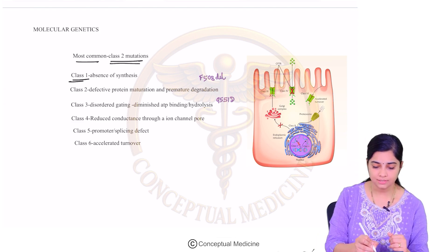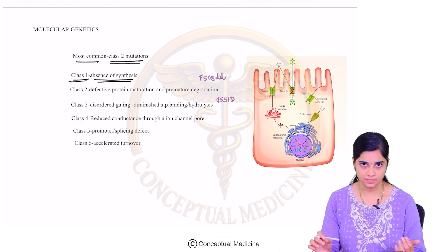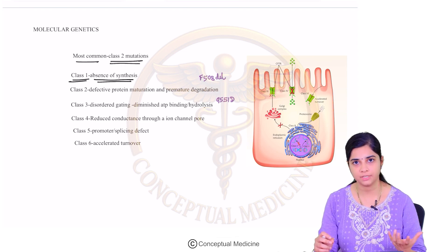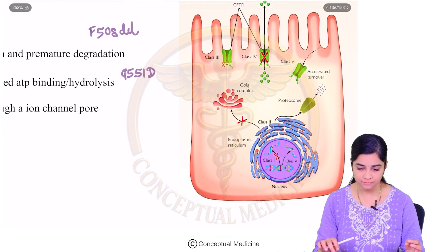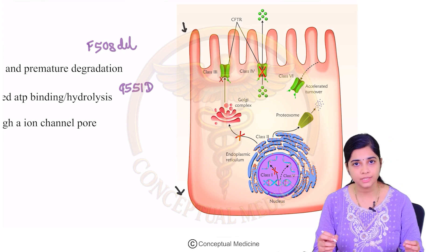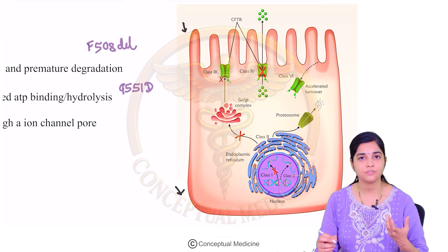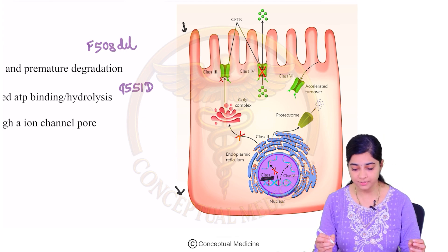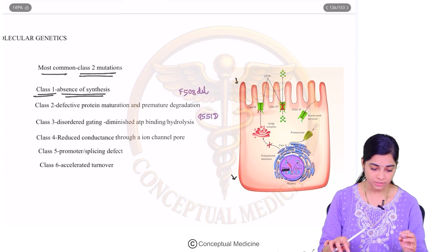Class 1 is a complete absence of synthesis of CFTR — no CFTR products are produced from the nucleus at all. Looking at this simplified diagram, you can see the apical surface, the basal surface, and within the nucleus, DNA undergoes translation and the CFTR gene is formed. In class 1, that synthesis is completely absent.